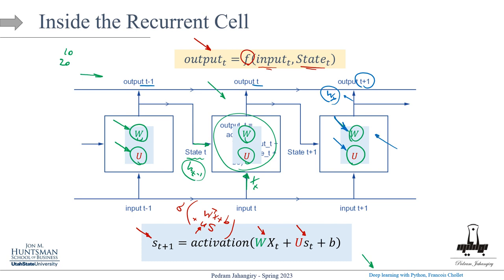In RNN, we can output predictions at different time steps. Different architectures exist: sometimes we only need the last output (e.g., temperature prediction using the last state S_T), and sometimes we output at every time step (e.g., language translation). Let's look at the different RNN architectures and their applications.